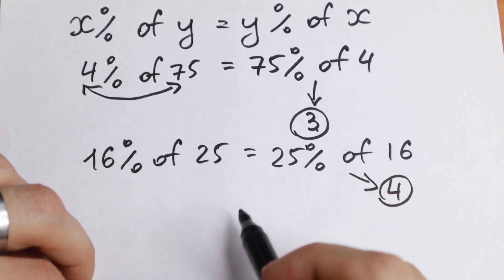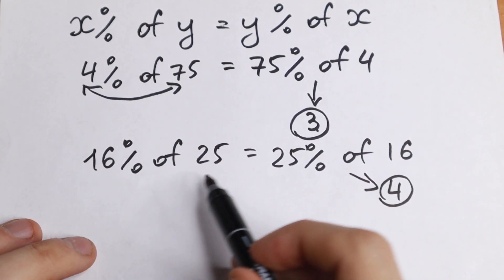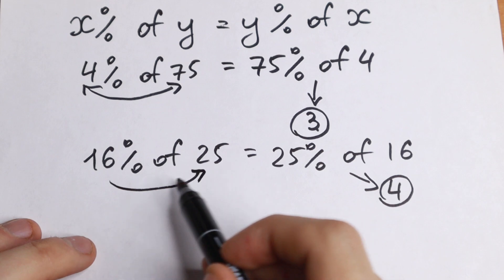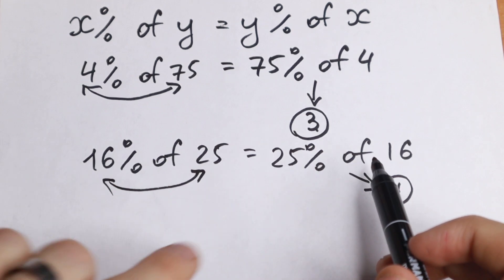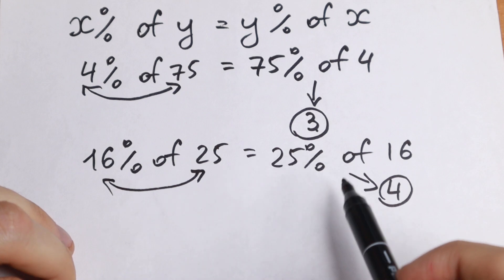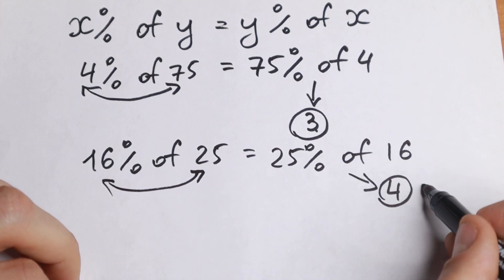So as you can see, this is a really good rule. We just swap these two numbers, right here this one and this one, and we just find our answer. 25 percent is better than 16 percent to calculate.